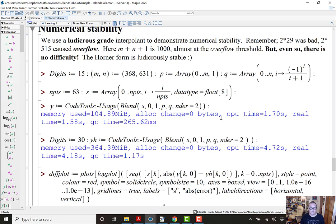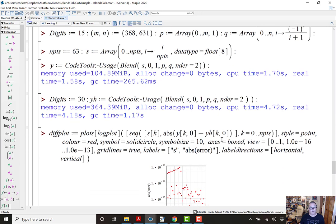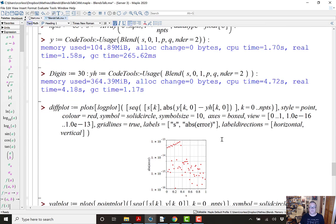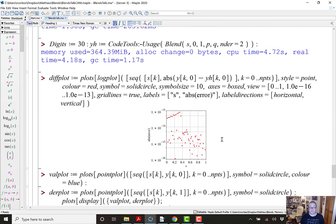And just for comparison, we do it again in 30 digits. And this takes longer, almost 5 seconds. And now we plot the difference between the 15-digit result and the 30-digit result. And the 15-digit result is correct essentially to 13 places. And if you think about it, 13 digits is the best you can expect out of a degree 1000 polynomial. And the error is everywhere smaller than that.